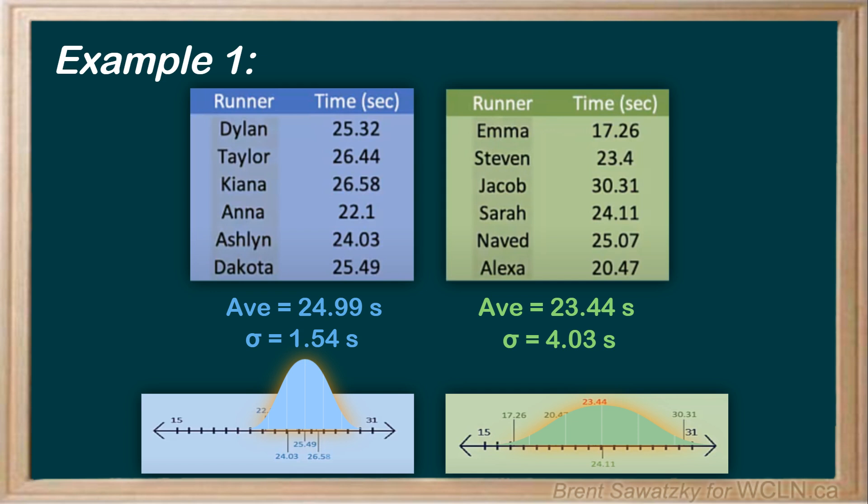Now, standard deviation has two possible symbols, either sigma or an s, depending on whether we use the entire population for the calculation or a sample of the population. Because in this case, we used all of the runners for each team in our analysis, we'll show the standard deviation as sigma.